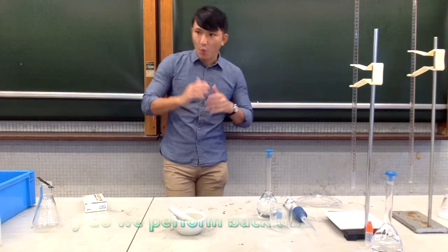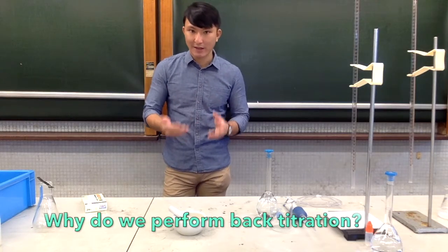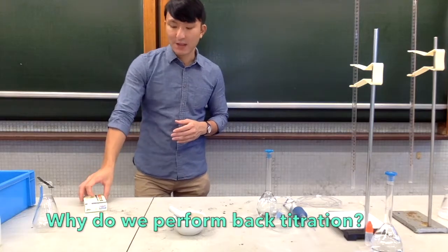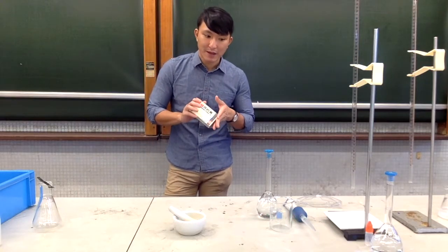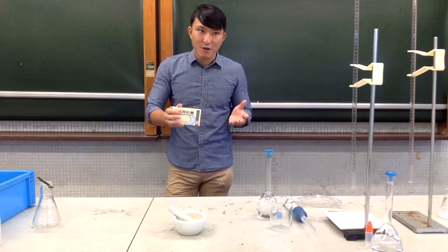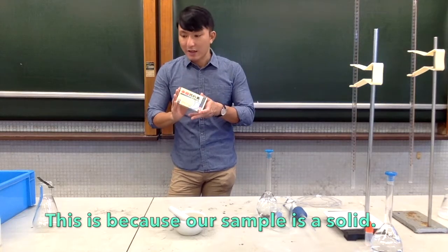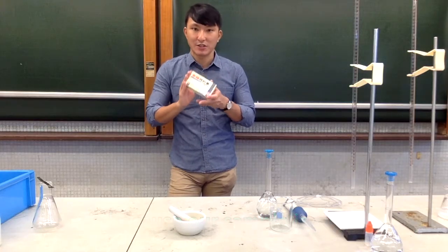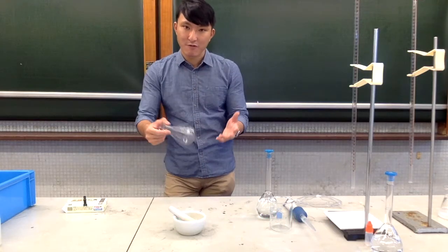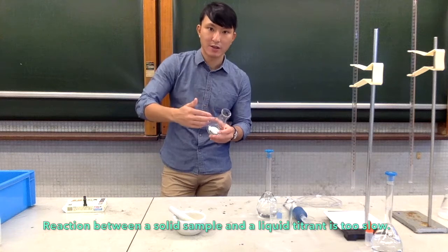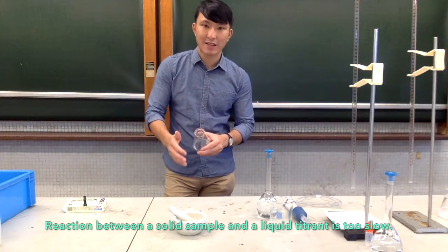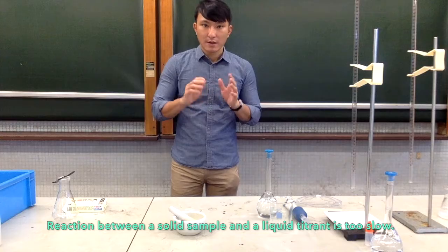Now the last question is, why are we performing back titration? Why don't we simply do direct titration with our antacid tablet? The very simple answer is that our sample is a solid. You can't titrate a solid directly. The reaction between a solution and a solid is too slow, so that it makes the direct titration not feasible. Now, let's get into the actual procedures.